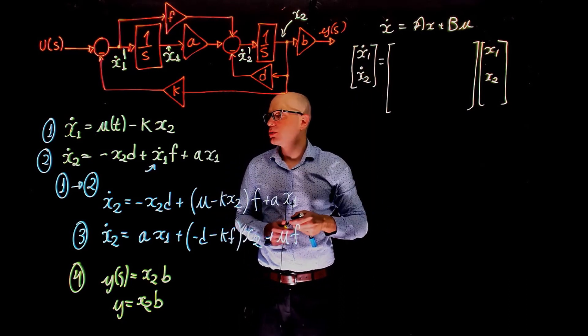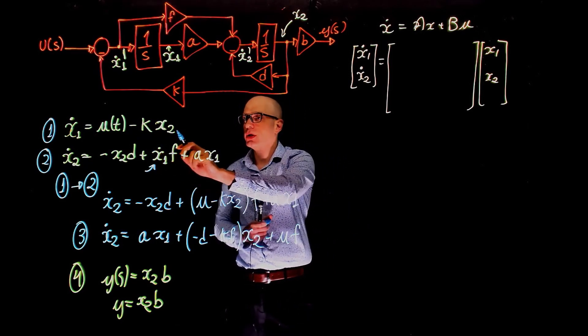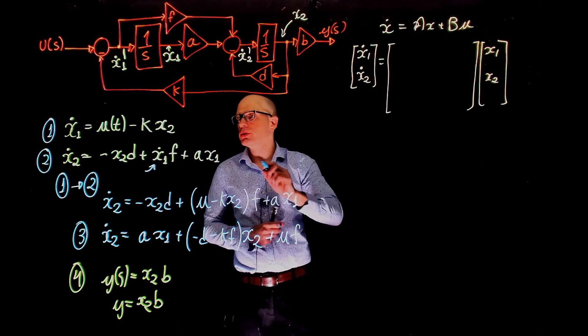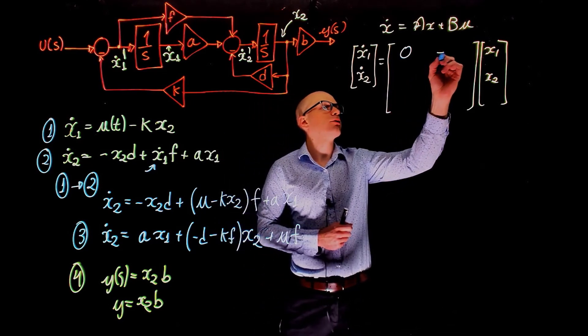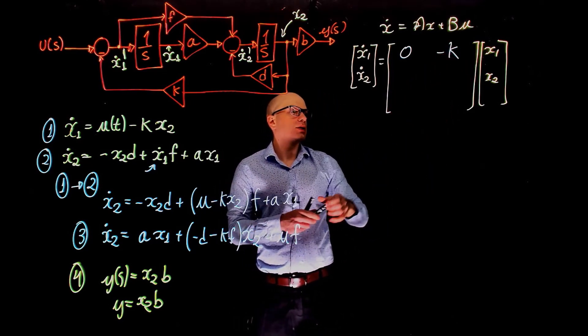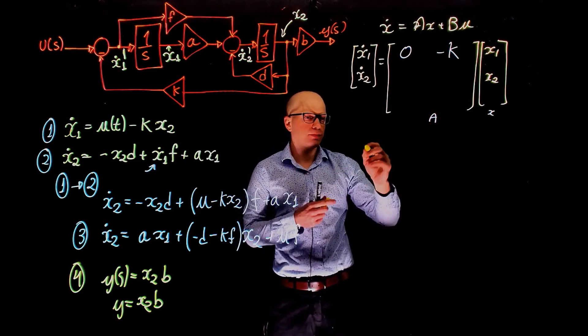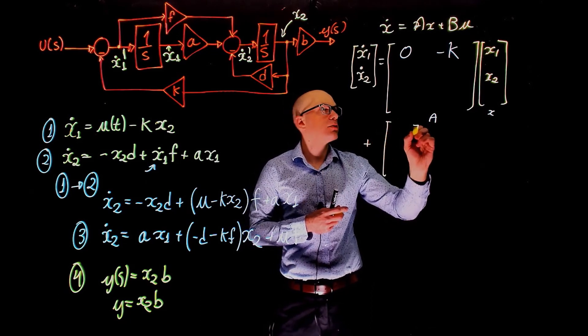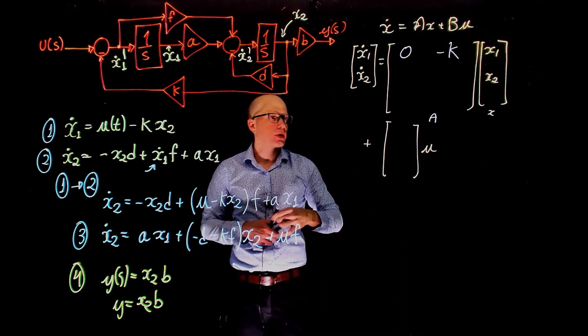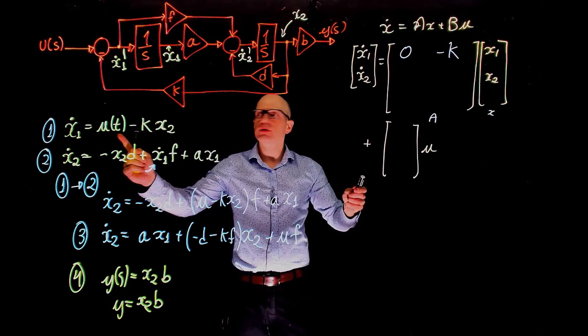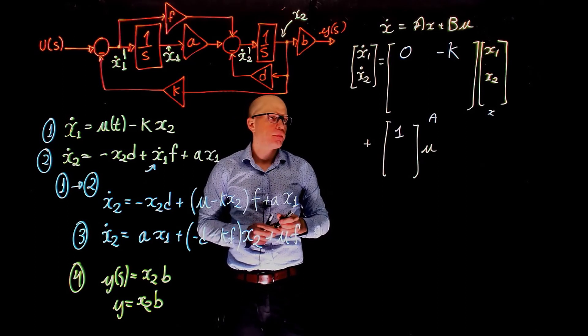Let's start with x1 dot. For x1 dot, we have no x1, it doesn't depend on x1, it only depends on x2 and u. So this is going to be, for the first element here, zero. And for the second element, we have negative k. So this is A, this is x, now let's do plus B times u, the input of the system. And we see that this shows x1 dot has a u of t here. So now, here we have 1 for x1 dot.